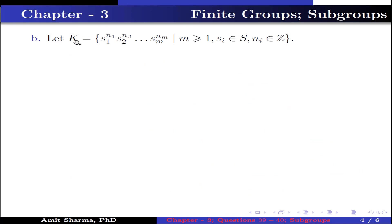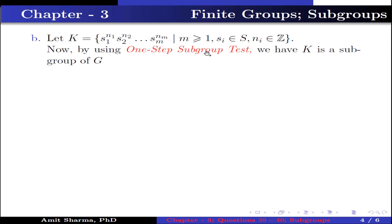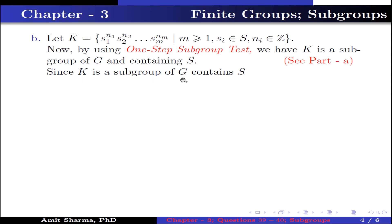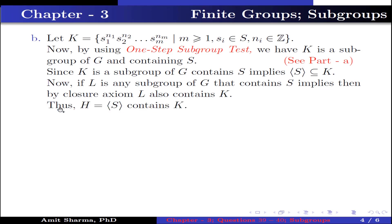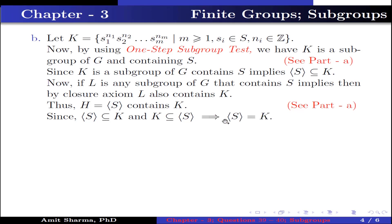Part b: let K be the set containing elements s1^n1 · s2^n2 · ... · sm^nm, where m ≥ 1, si belongs to S, ni belongs to ℤ. By using the one-step subgroup test, K is a subgroup of G containing S — for more detail see part a. Since K is a subgroup of G containing S, the set generated by S is contained in K. Now, if L is any subgroup of G that contains S, then by the closure axiom L also contains K. Thus H equals the set generated by S, which contains K.